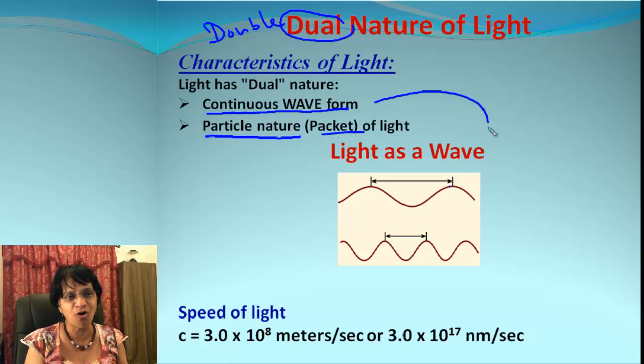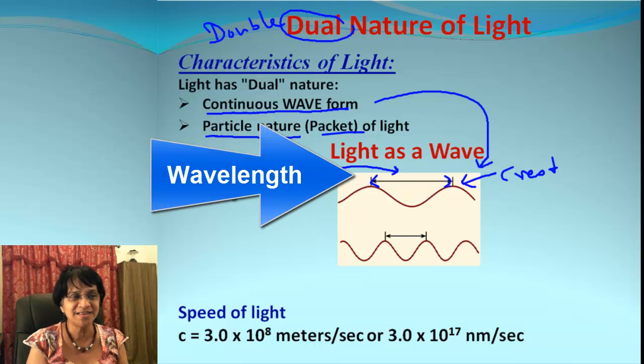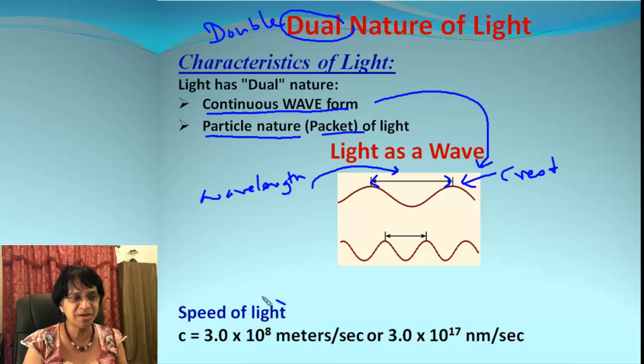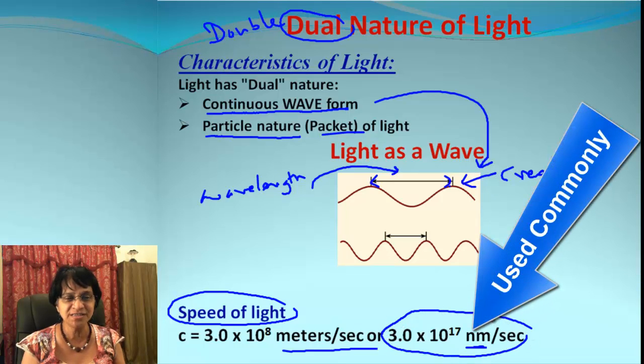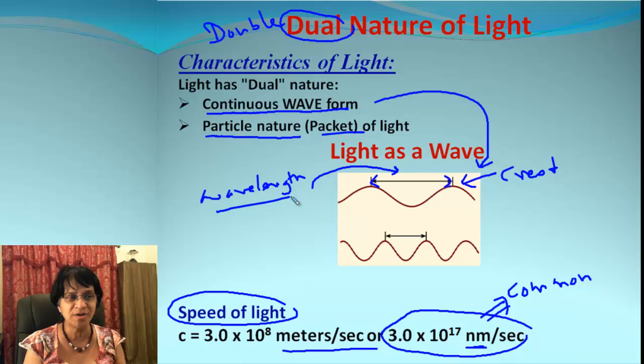The waveform is shown in the figure, and the distance between the two consecutive crests is called the wavelength for that particular light wave. The speed of light is 3.0 × 10^8 meters per second, and when we use nanometers that's 3.0 × 10^17 nanometers per second. This is what we will be using most commonly because when we use the equation, wavelength is in nanometers.